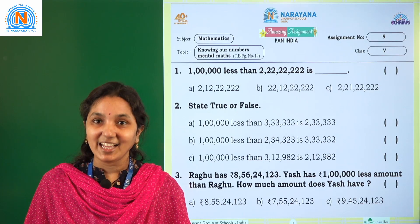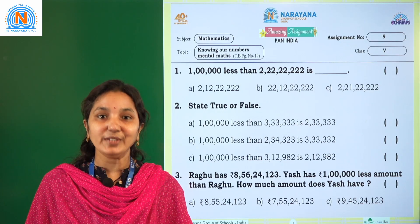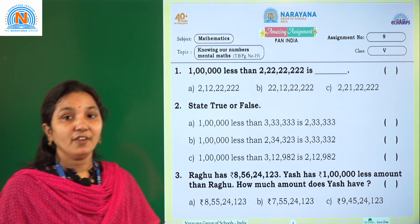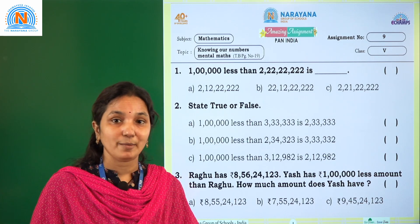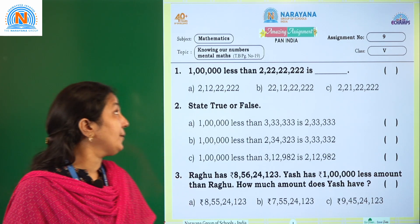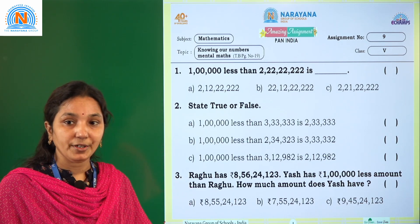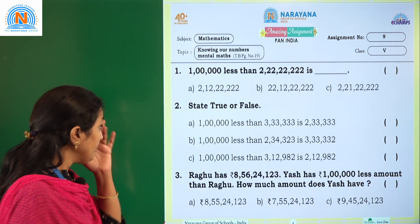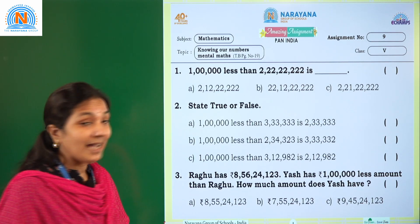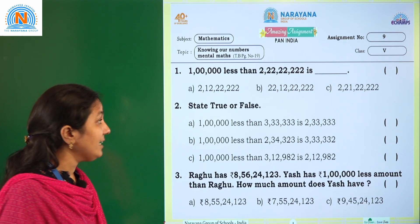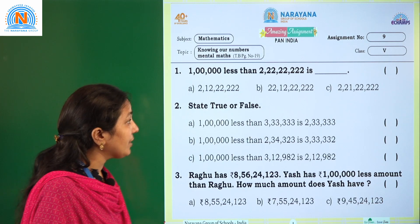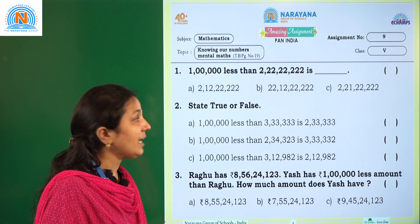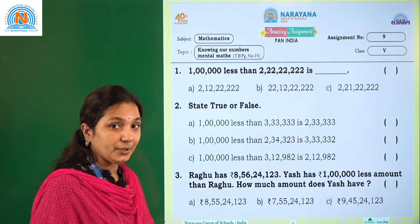Hi children, welcome to Narayana live classes. Today our amazing assignment is knowing our numbers. From knowing our numbers you are going to do mental math. So today our first question is: 1 lakh less than 2 crore 22 lakh 22,222 is.